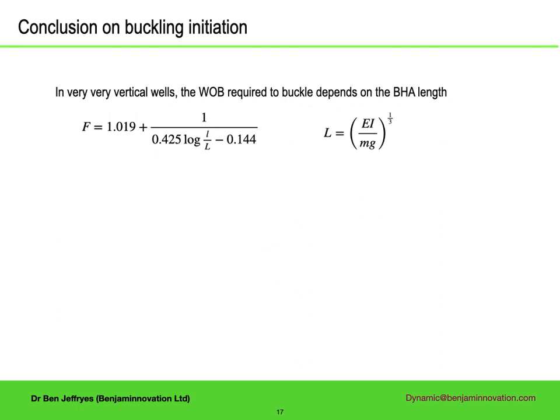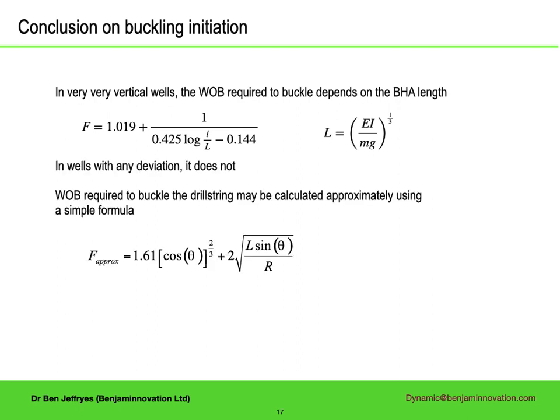Finally, a conclusion based on a mixture of theory and numerics. If you have an extremely vertical well, the critical buckling load depends on the BHA length and is given by this formula. As soon as you have any deviation, this no longer applies, and you could use instead a formula that depends on deviation and not length.